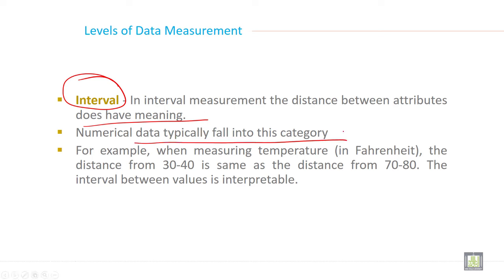For example, when measuring temperature in Fahrenheit, the distance from 30 to 40 is the same as the distance from 70 to 80. The interval between values is interpretable.